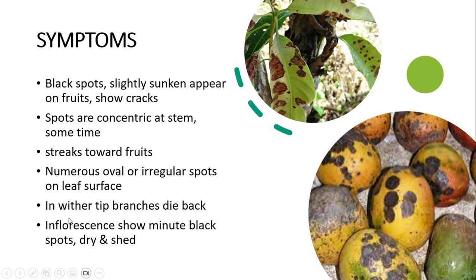Branches show die back. Die back starts. Similar to citrus wither tip, symptoms appear on florescence showing minute black spots that dry out.